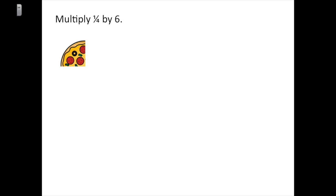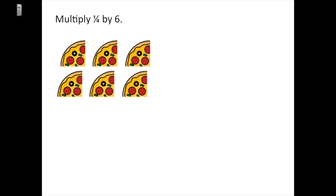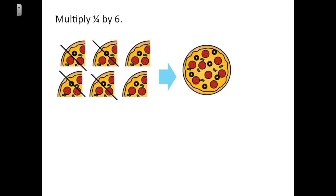Let's try another one. We're asked to multiply one-fourth by six, so that means I have six one-fourths. If I combine four one-fourths, I make one whole pizza and I'm left over with two one-fourths. One-fourth and one-fourth equals two-fourths, which is the same as one-half. So one-fourth times six equals one and a half. Let's also look at how we solve this mathematically.